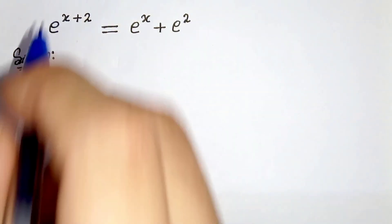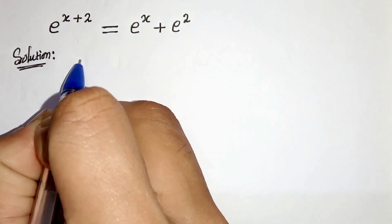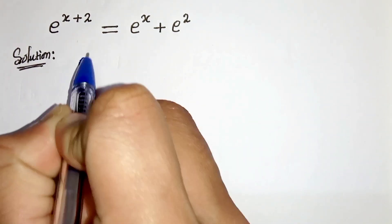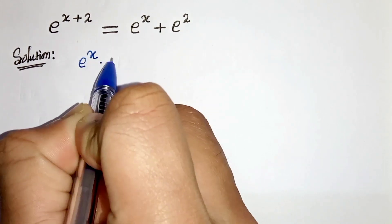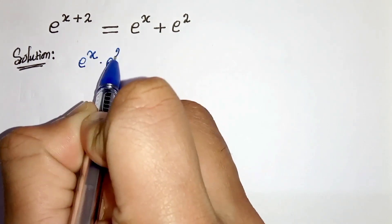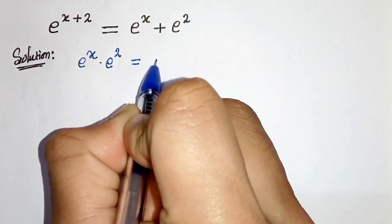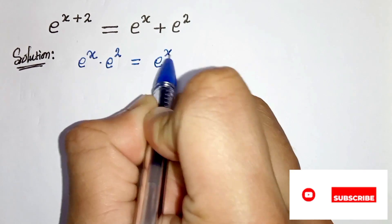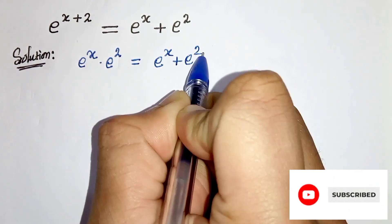First of all, we can write e to the power x plus 2 as e to the power x times e to the power 2, equals e to the power x plus e to the power 2.